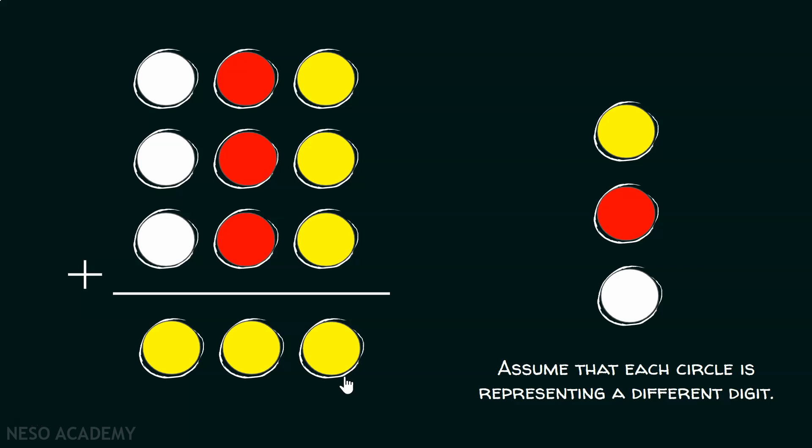You can clearly see, the result is a three digit number. And obviously, all the digits are same.